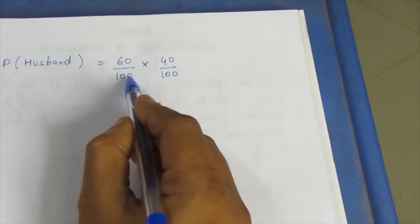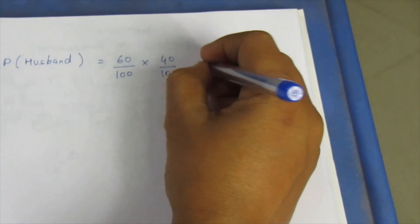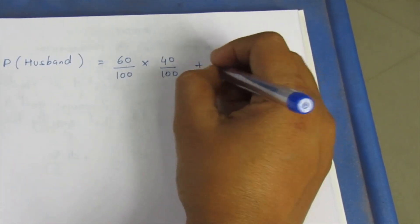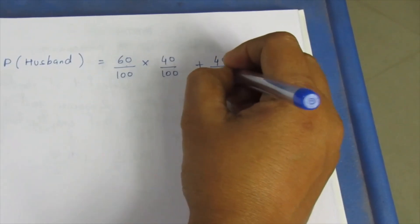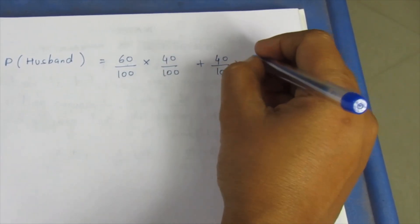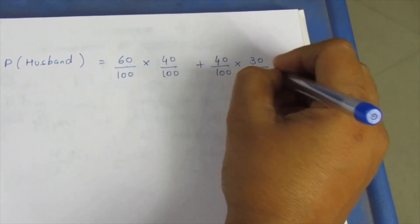So we have wife not watching: 40 by 100, and husband watching: 30 by 100. We calculate 40 by 100 into 30 by 100.